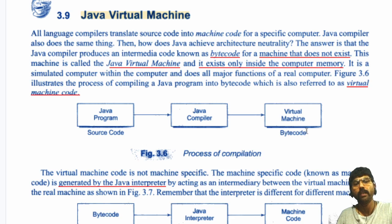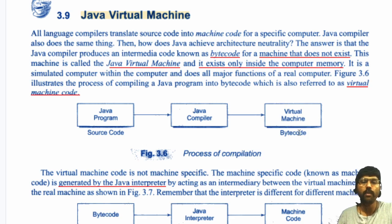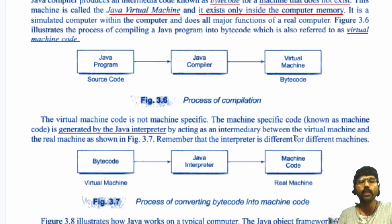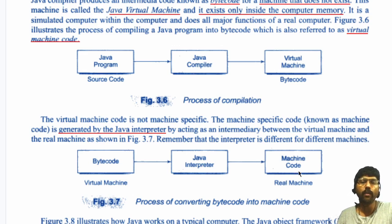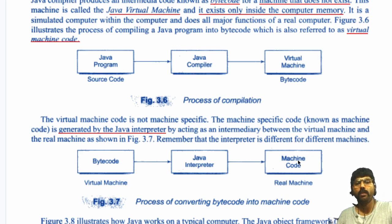The virtual machine is in your memory, so byte code is not actually machine-specific code. This virtual machine gives that byte code to the Java interpreter. The Java interpreter converts that byte code into machine-specific code and runs that machine-specific code on the particular machine. Using this feature, we can achieve portability.